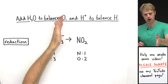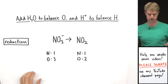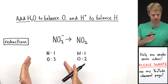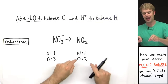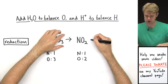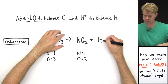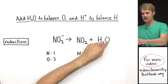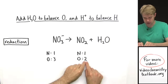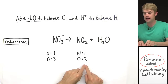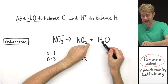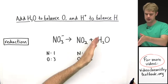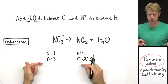Next, add H₂O to balance oxygen and H⁺ to balance hydrogen. There's an imbalance in oxygens — three on the left and two on the right — so I need to add more oxygen to the right side. I'll add one H₂O, which gives me that one extra oxygen I need, going from two to three on that side. Nitrogens and oxygens are now balanced, but by adding H₂O I introduced hydrogen into the equation.